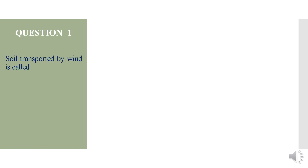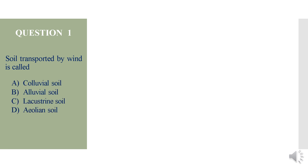Question 1: Soil transported by wind is called — options are colluvial soil, alluvial soil, lacustrine soil, or aeolian soil. Soil is formed by weathering of solid rocks, and it can be either mechanical weathering or chemical weathering.